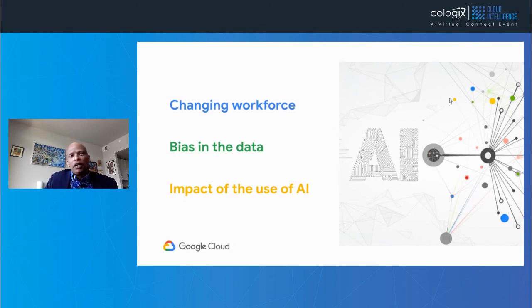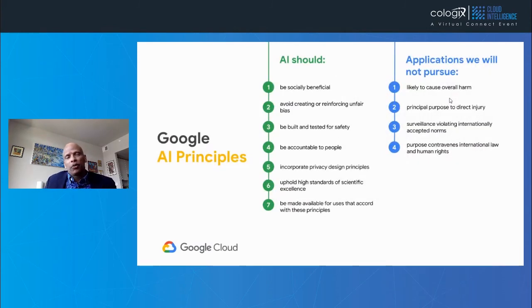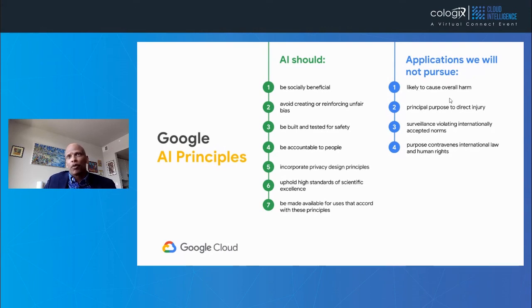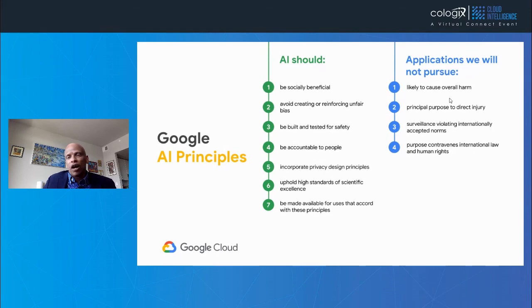We are excited to bring these tools and services to you. Another critical thing is Google's AI principles, and we really want our customers and partners to embrace them. On what AI should do: it should be socially beneficial, it should be built and tested for safety, and it should incorporate privacy design principles and be made available for users that accord with those principles. Things we really don't want to do with AI: anything that likely causes overall harm, causes direct injury, violates internationally accepted norms around surveillance, or breaks international law and human rights.